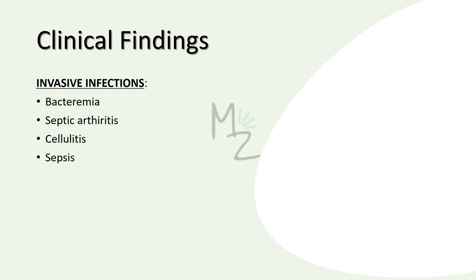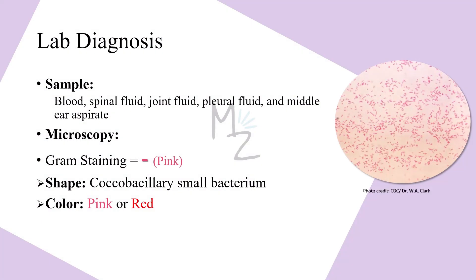Invasive infections: Other serious infections caused by Haemophilus influenzae include bacteremia if it spreads to the blood, septic arthritis if it spreads to the joints, cellulitis, and sepsis. Lab diagnosis requires samples of blood, spinal fluid, joint fluid, pleural fluid, and middle ear aspirate — we collect samples from the area of infection to figure out what is causing it.